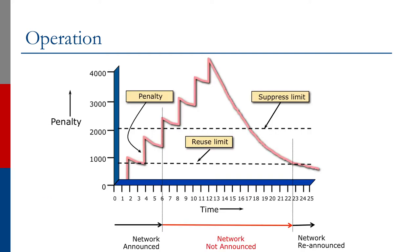The diagram shows this most straightforwardly. The vertical axis is the penalty value and the horizontal axis is a nominal time value. The prefix flaps every few minutes, attracting a penalty of 1000, and the penalty value decays exponentially. At some point the penalty crosses over a predefined suppressed limit — 2000 in the diagram.